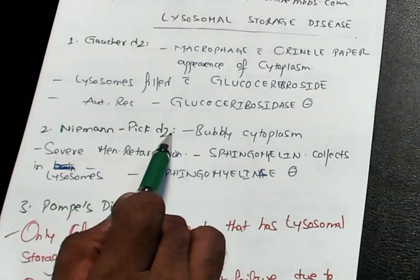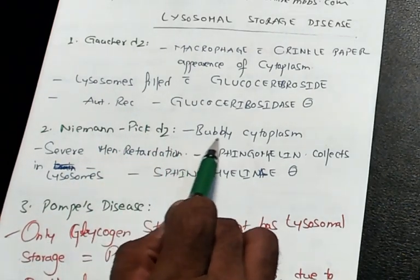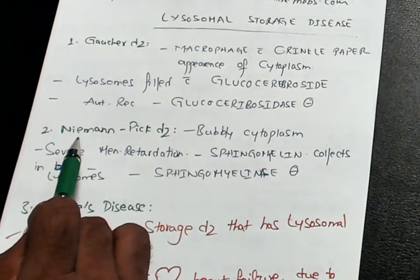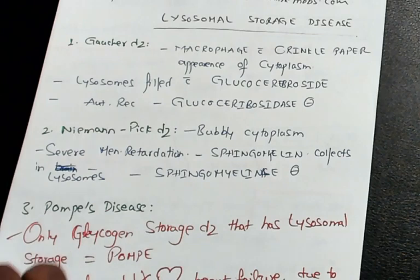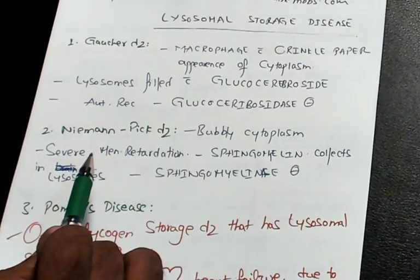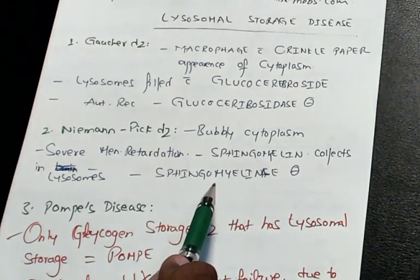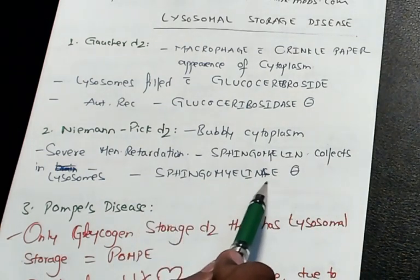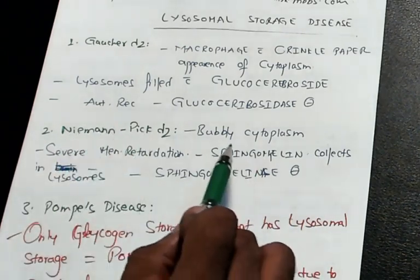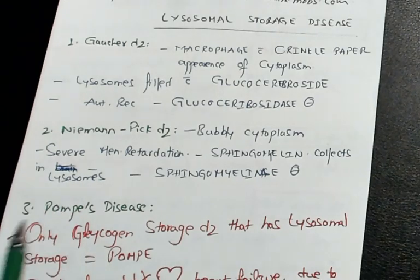Niemann-Pick's disease — what will you remember? Bubbly cytoplasm. In Niemann-Pick disease there is severe mental retardation. Sphingomyelin becomes accumulated. Why? Because sphingomyelinase is deficient. That is the reason in Niemann-Pick, sphingomyelin collects in the lysosomes — that is what you should remember.